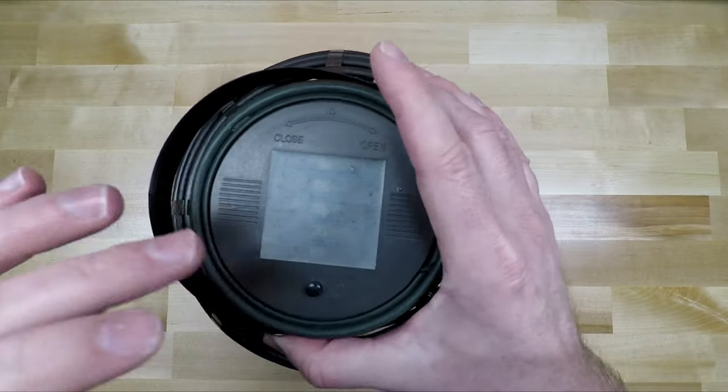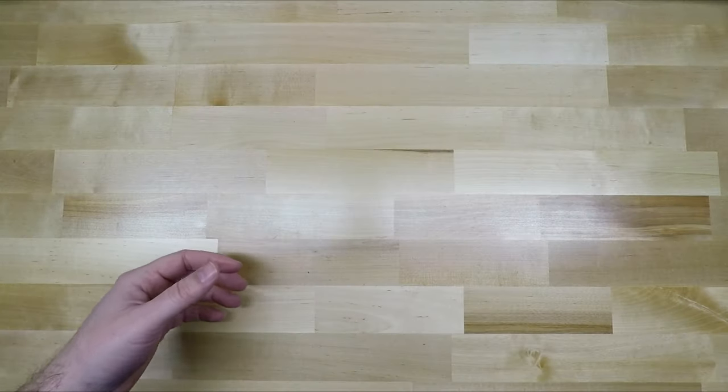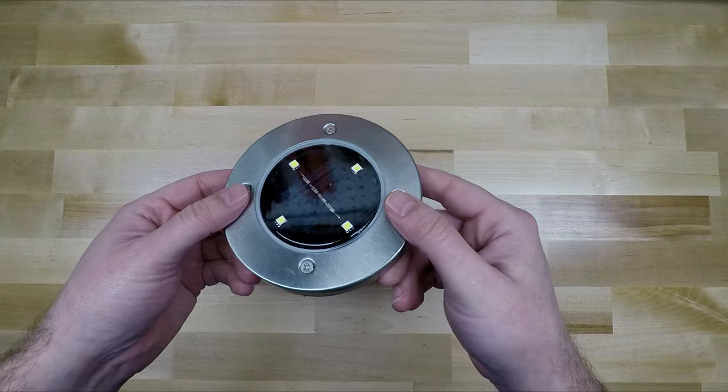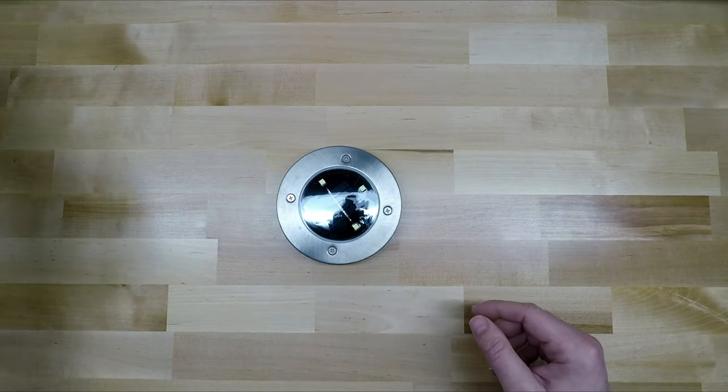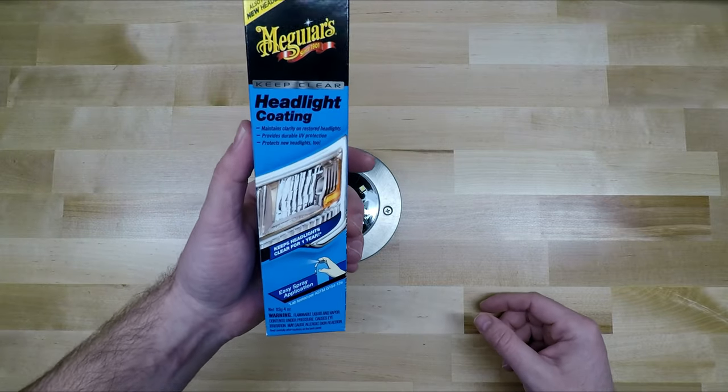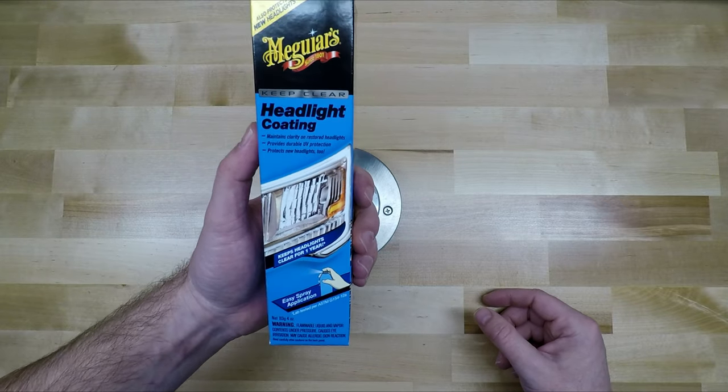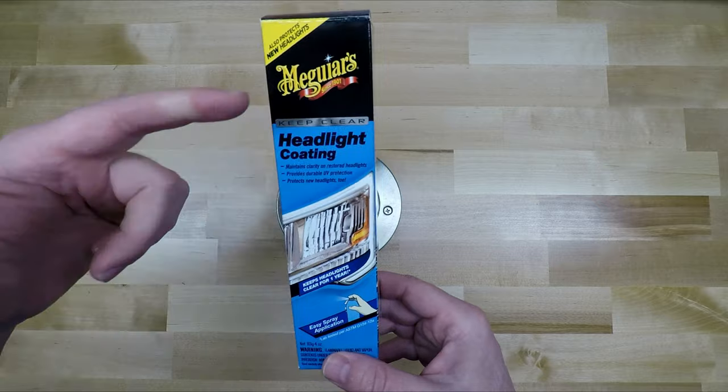But here's a tip on how to prevent this from happening to begin with. Here's a new solar panel and what I'm going to use on it is actually headlight coating. I've used this on my vehicles. It seems to work pretty good. It's from Meguiar's obviously.